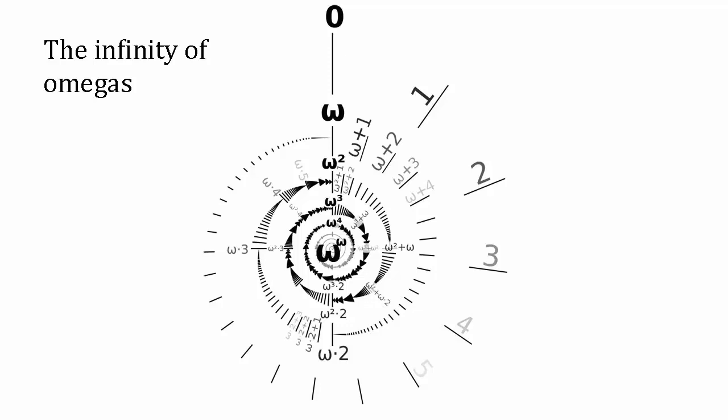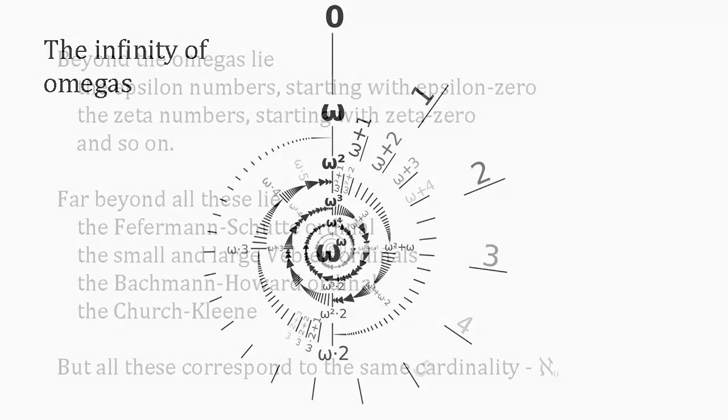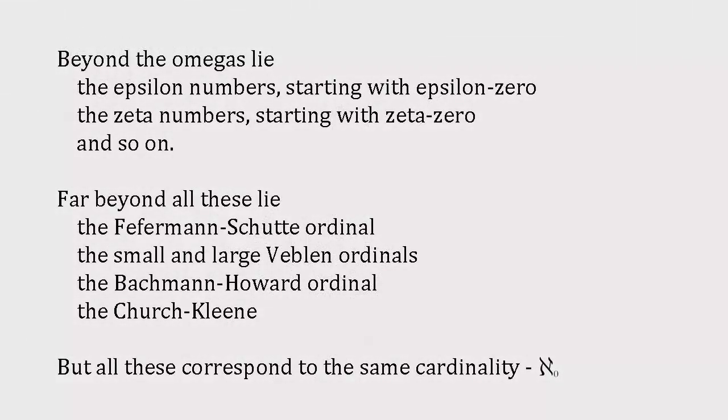Finally, beyond this lies a new level, an ordinal that Cantor called epsilon zero. Just as omega is the smallest ordinal that lies beyond the finite ordinals, epsilon zero is the smallest ordinal that lies beyond any ordinal that can be expressed in terms of omega using addition, multiplication, and exponentiation.